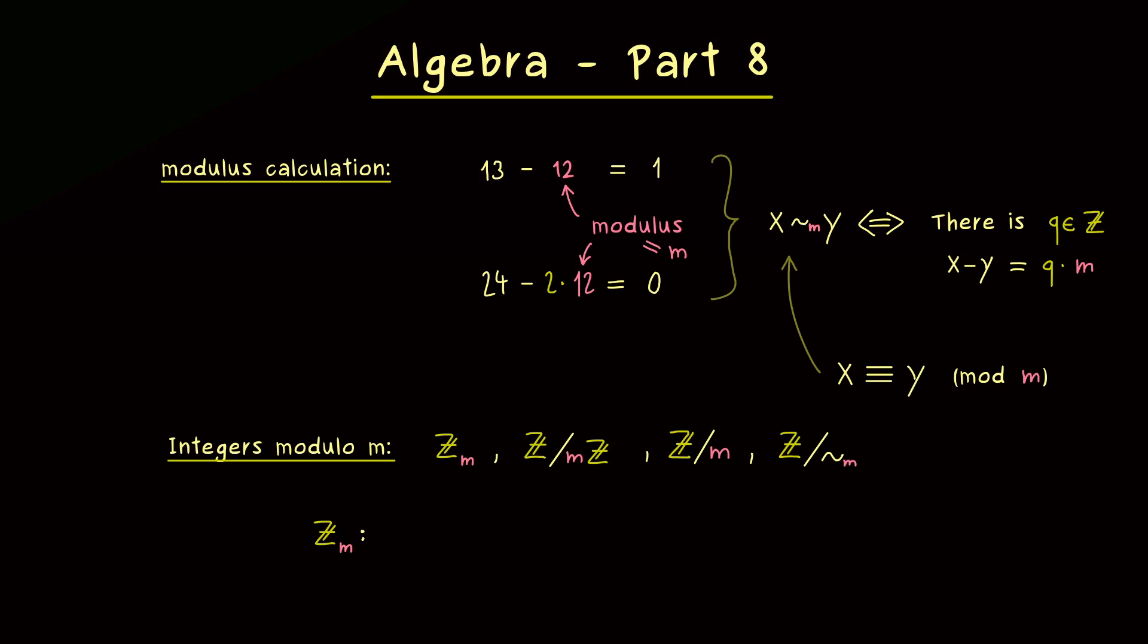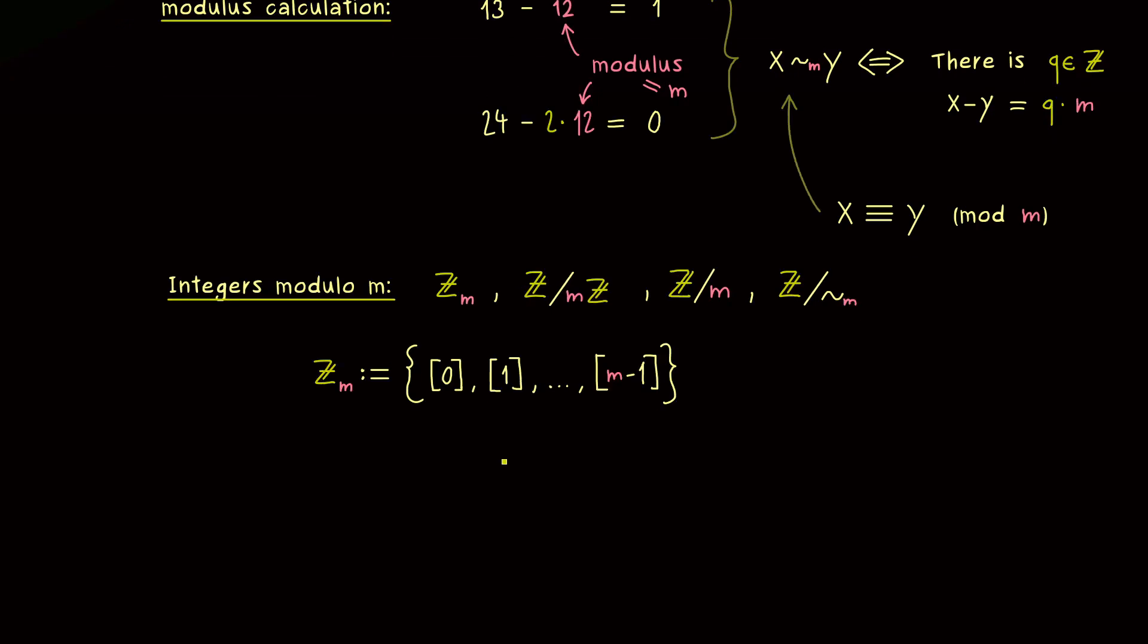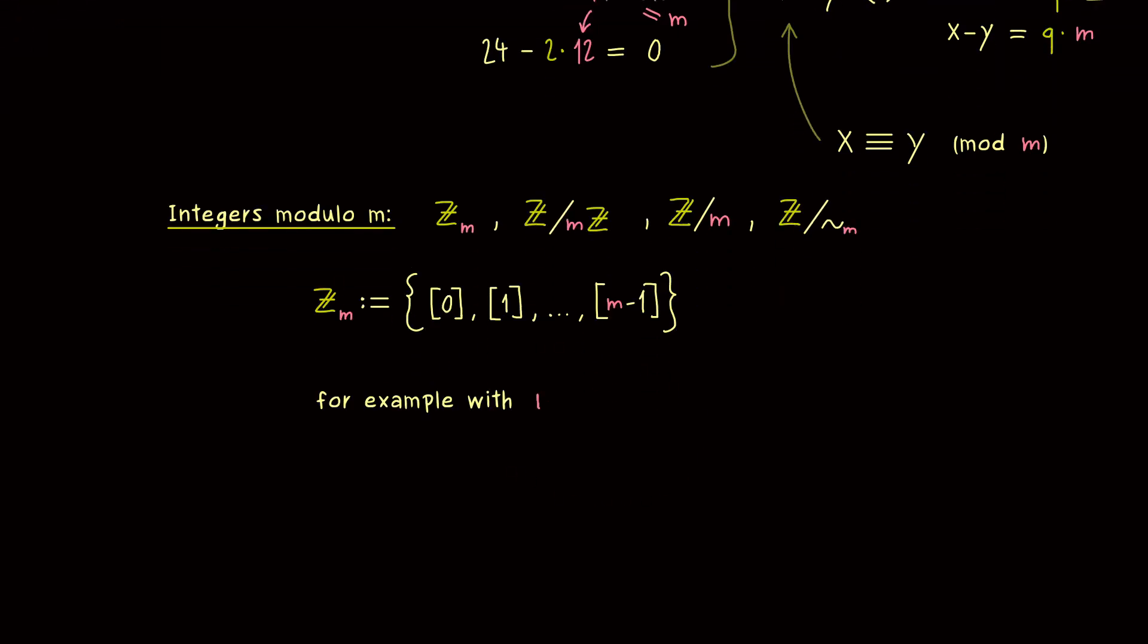So as already mentioned, Z_m stands for the set of equivalence classes, and they are denoted by brackets. So we have the equivalence class of 0, the equivalence class of 1, and so on. And now it turns out that we have exactly m different equivalence classes in Z. Hence, the last one here is m-1. And this totally makes sense, as you can recall with the clock. There we have actually 12 hours on the clock. So maybe we take this example again to get a visualization for Z_m. Here our modulus m is 12 again. But in general, as you can see, it could be any natural number.